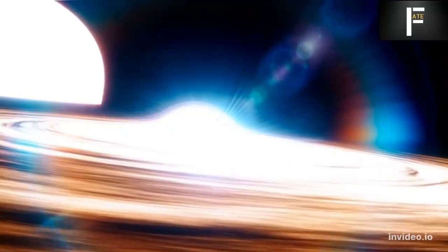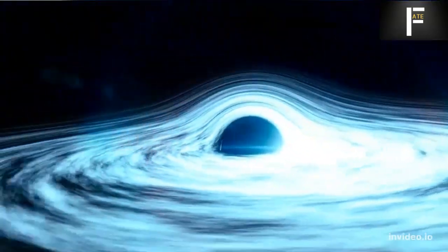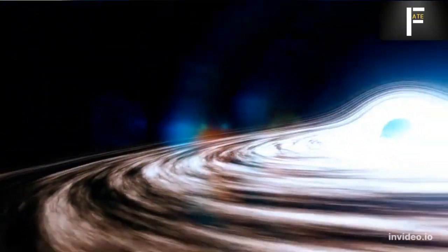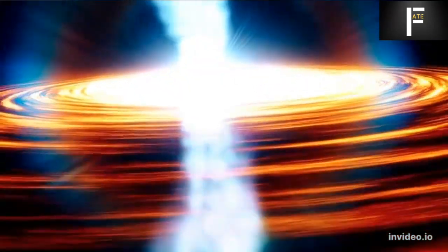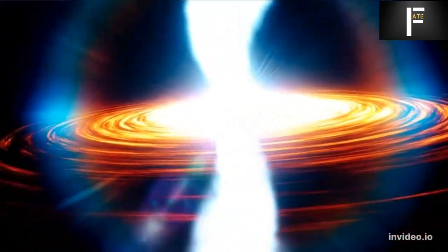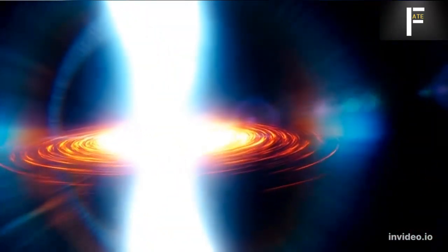Scientists have found the fastest-growing black hole ever seen. About halfway across the cosmos, astronomers headed by Australian National University discovered the supermassive black hole. Every second, it uses up the energy equivalent of Earth. The furthest black hole ever found dates back to the beginning of the universe and weighs the same as 3 billion suns.